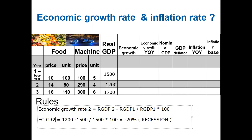For year three, using the base year comparison: 1700 minus 1500, divided by 1500, times 100. The result is positive — approximately plus 13 percent — indicating increased production and positive economic growth.